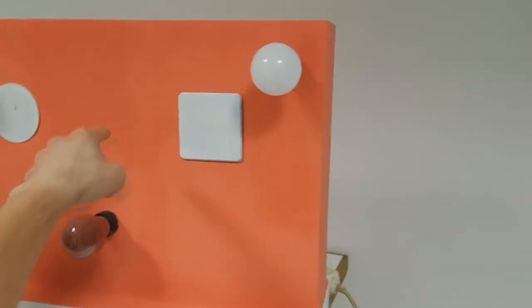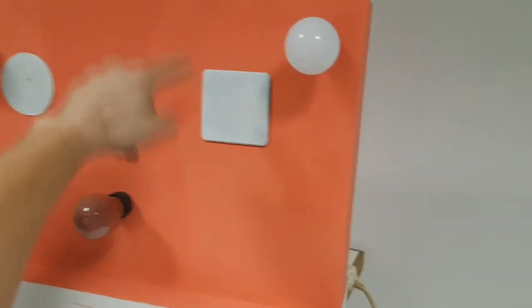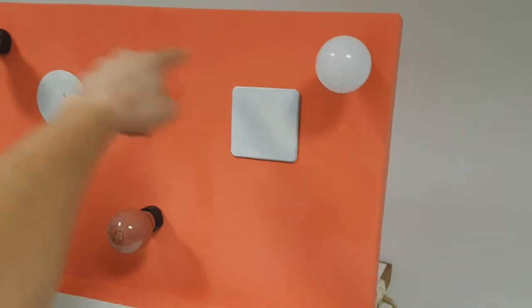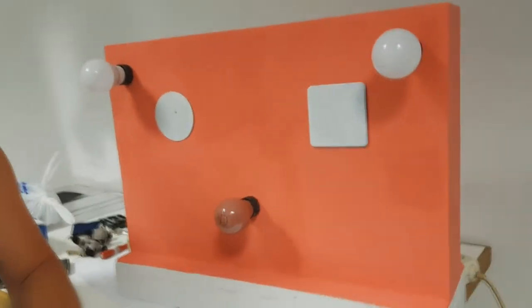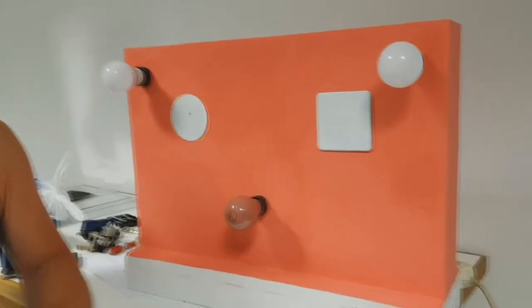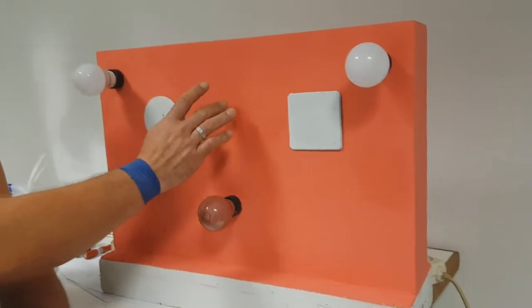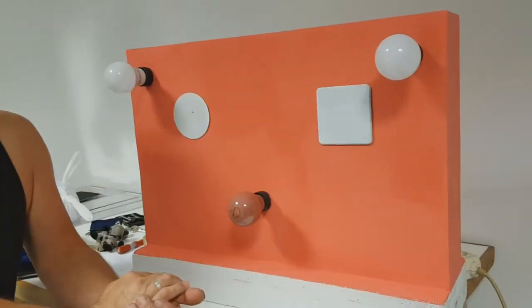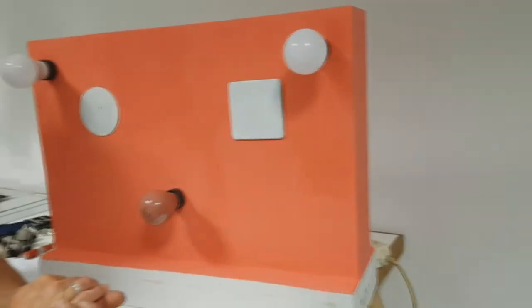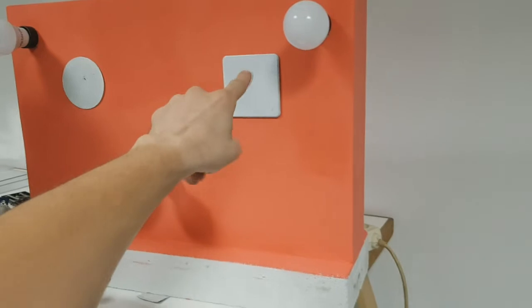We mounted this capacitive sensor in this wall and we painted this circle, this surface with conductive ink. Just a small touch to the wall and you can turn on your light in your home. This is the demo wall for demonstrating these capacitive switches.